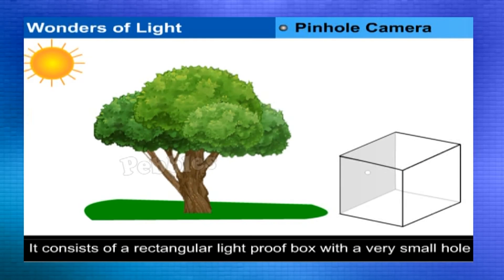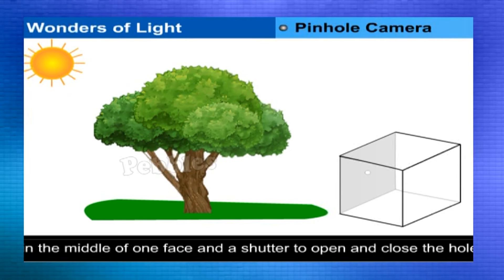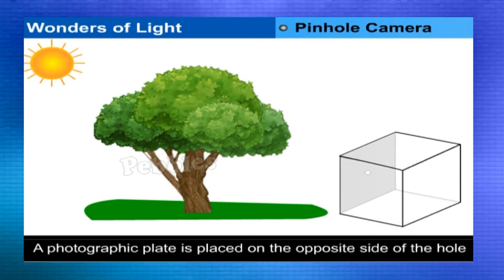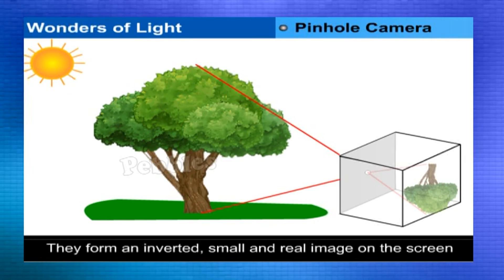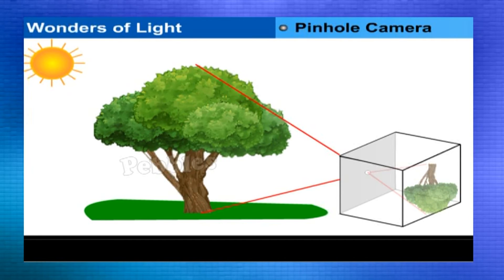A pinhole camera consists of a rectangular light-proof box with a very small hole in the middle of one face and a shutter arrangement to open and close the hole. A photographic plate is usually placed on the opposite side of the hole. When rays of light from an object pass through the fine hole, they form an inverted, small, and real image on the screen. The sharpness and size of the image can be altered by adjusting the distance of the object from the hole.